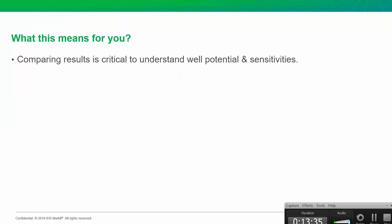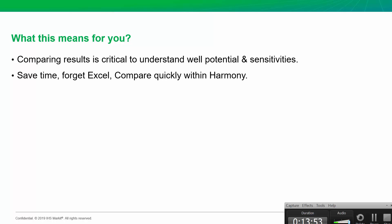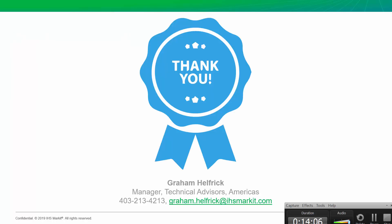What does this comparison plot mean for you? We all know that comparing results across different sensitivities is critical when making decisions, and you can do that all within Harmony Enterprise. You're also going to save a lot of time — if you thought you had to export results from Harmony or PIPER to Excel to compare them, you don't. The comparison plot within Harmony and Harmony Enterprise lets you do this just as quickly as shown here. Thank you for your time. If you have any questions, please call or email me and subscribe to be notified of next week's Did You Know episode.